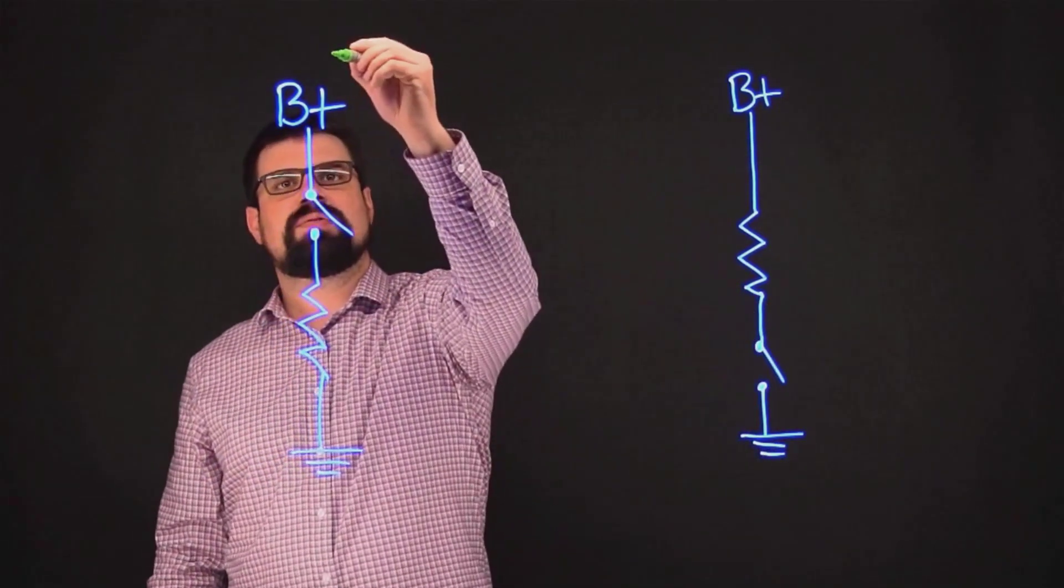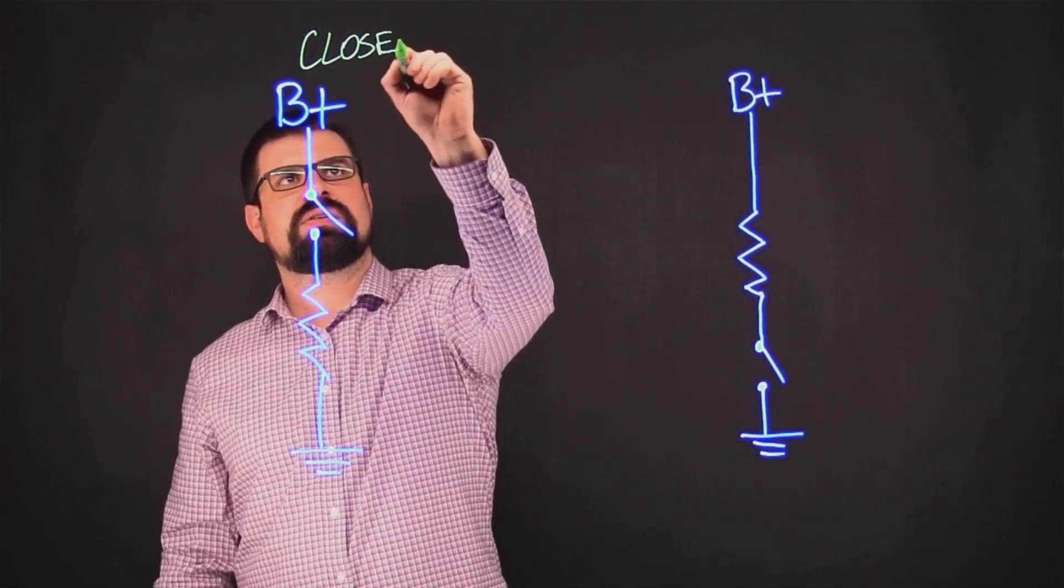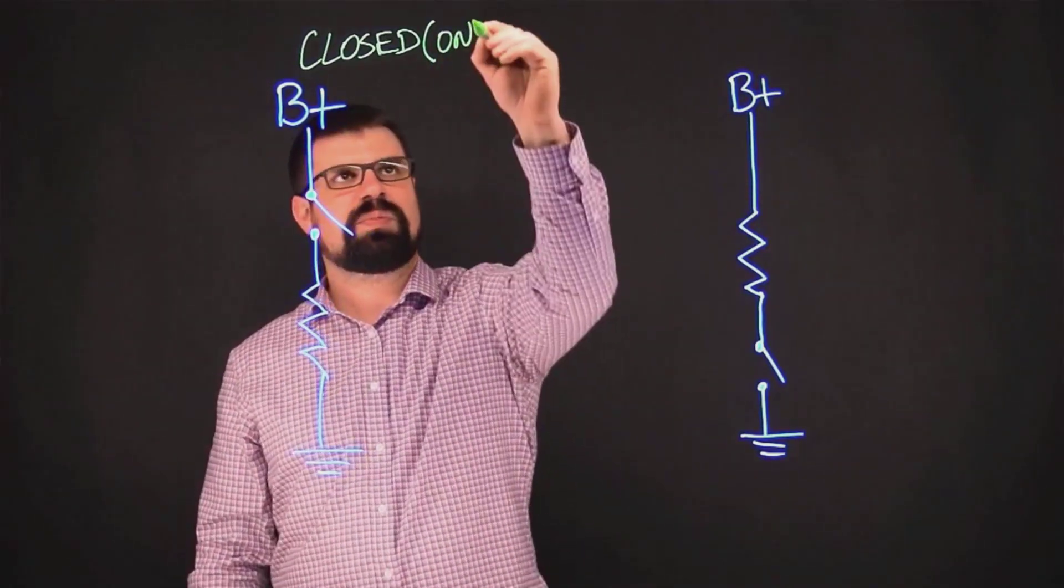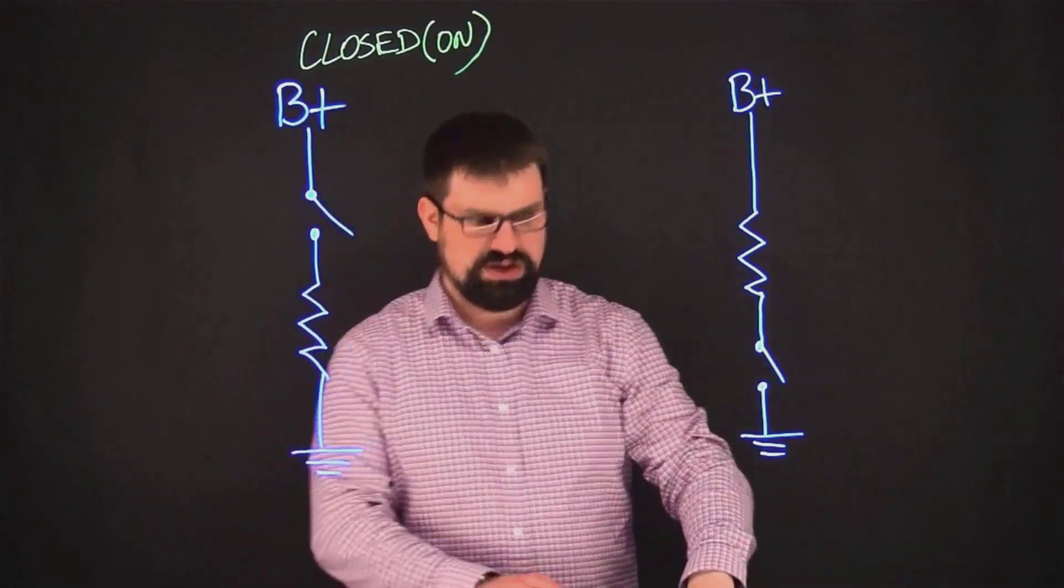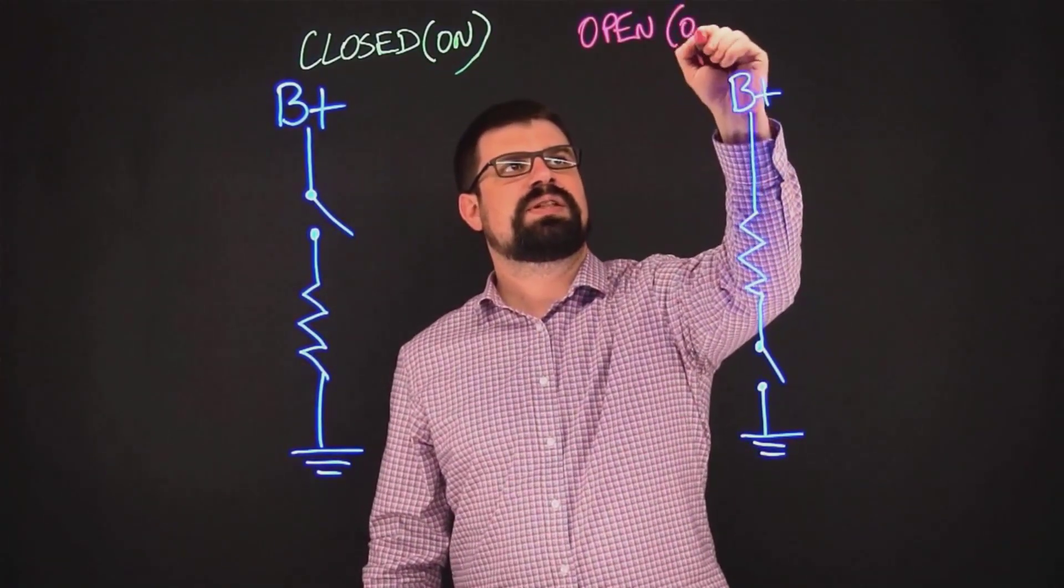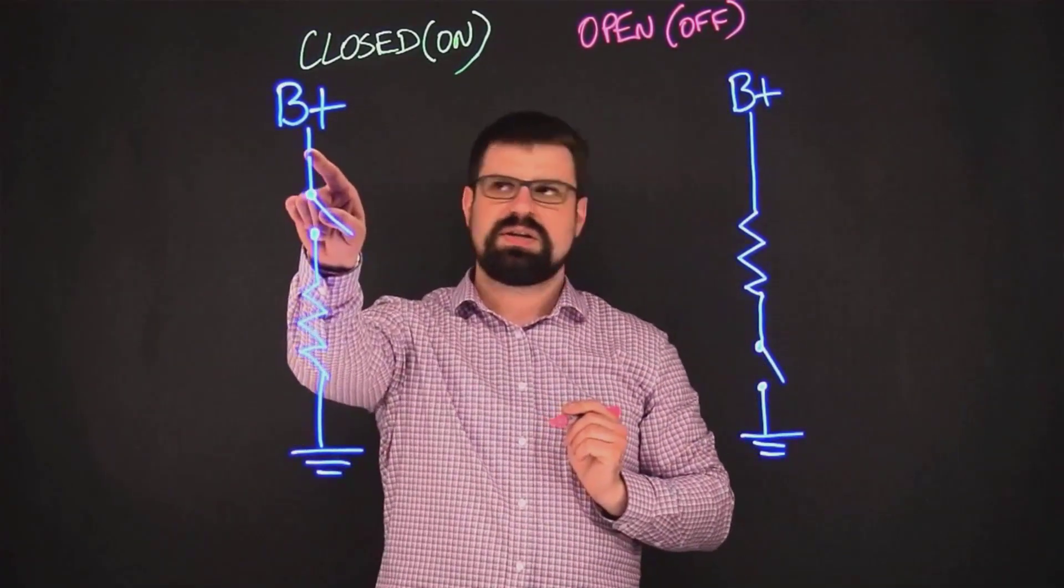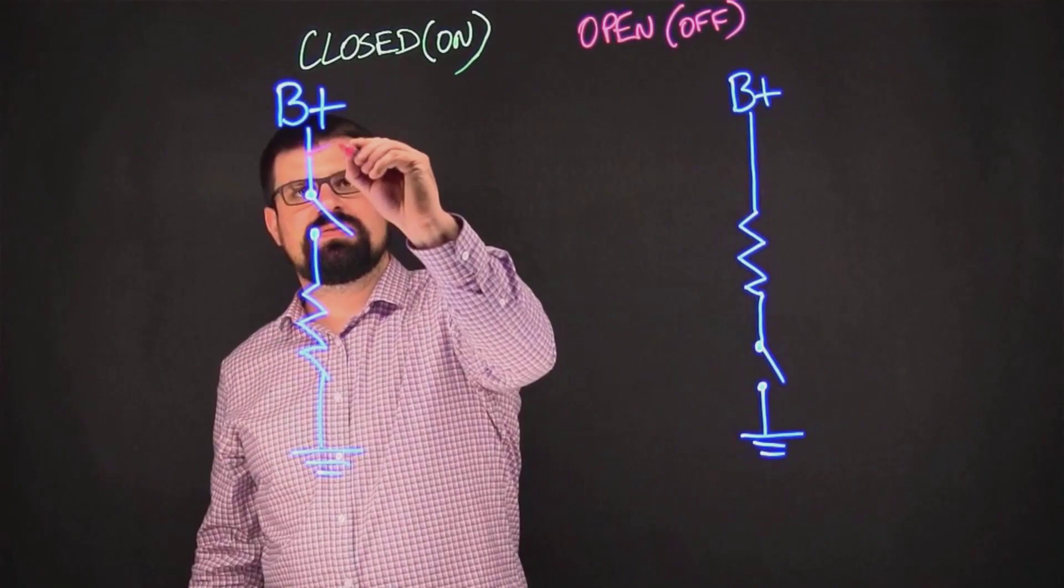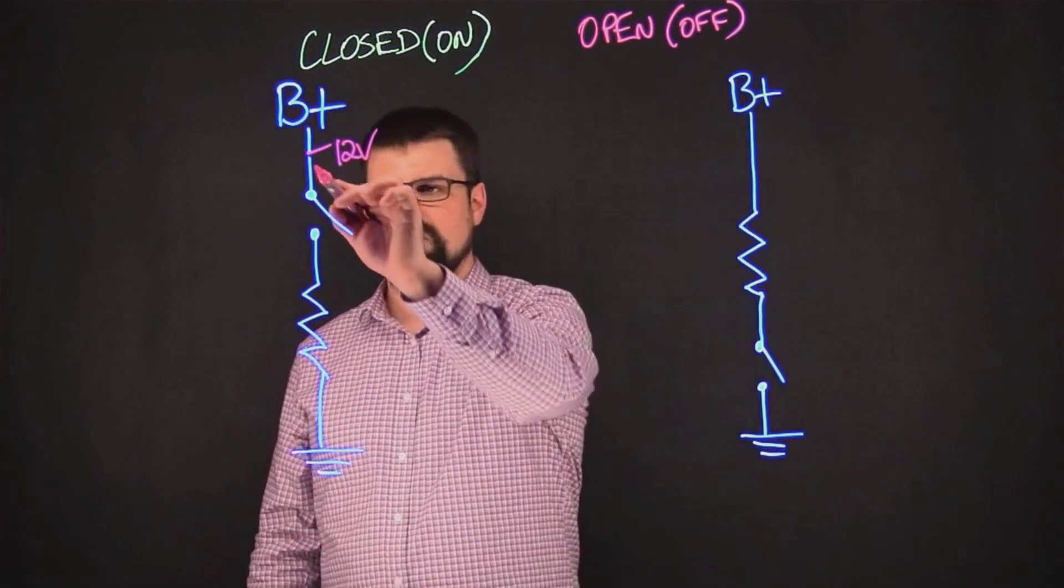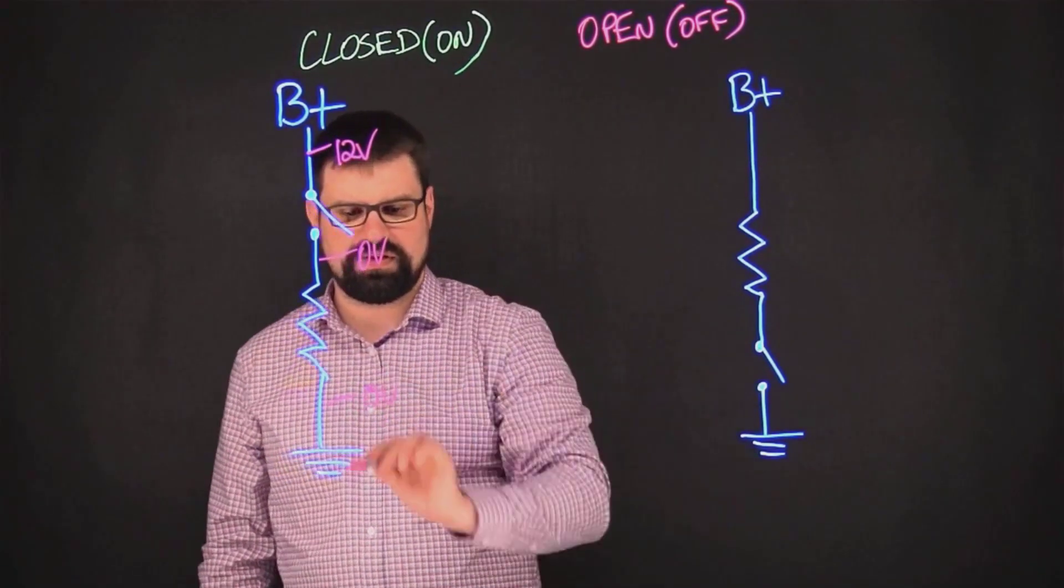So let's go ahead and look at voltage conditions. Green is going to be with the switch closed and the circuit is on, and then red, it's going to be switch open, and that would be really no current flowing, circuit is off. At this point right here, we're going to have 12 volts all the time, even with current flowing. With the switch open though, we're going to have zero volts at this point, and then zero volts on the ground side.